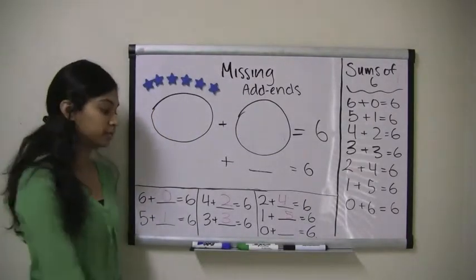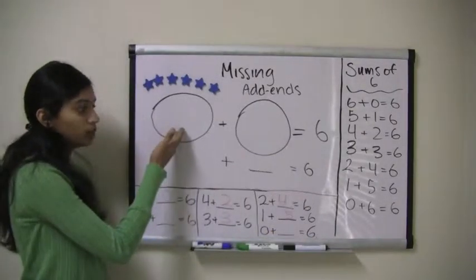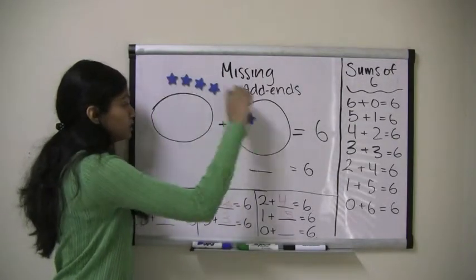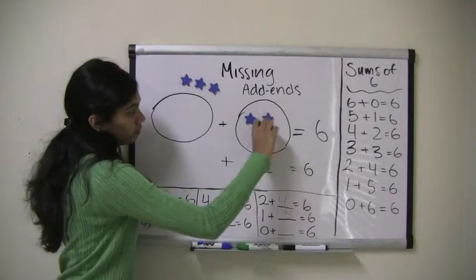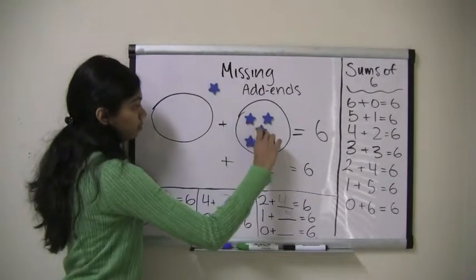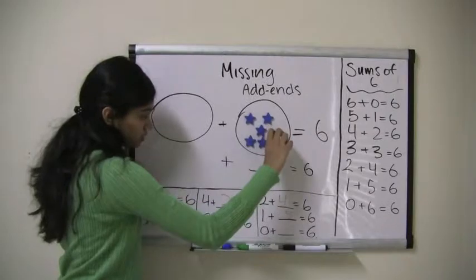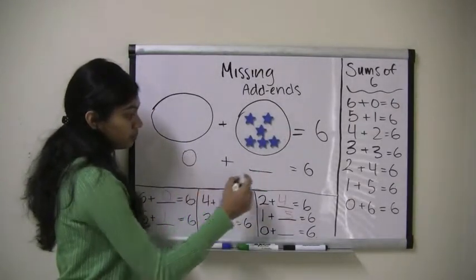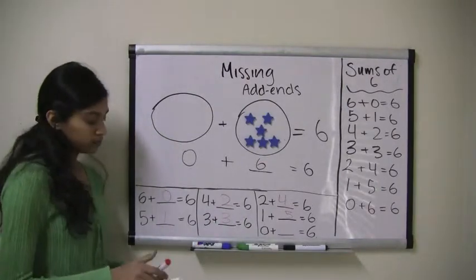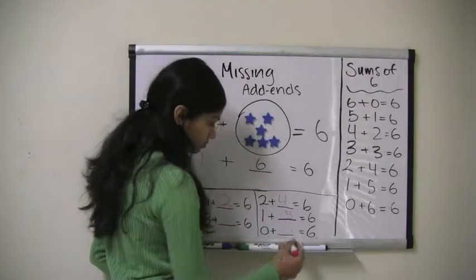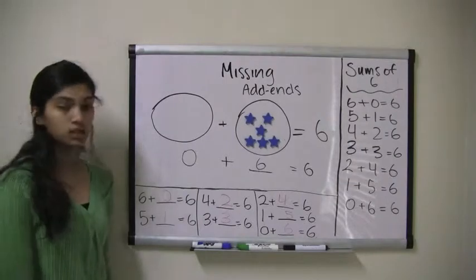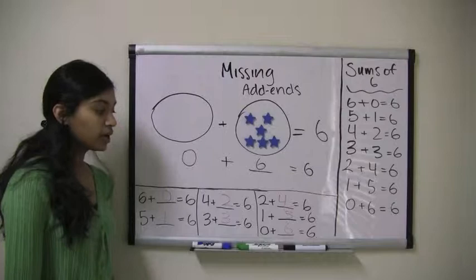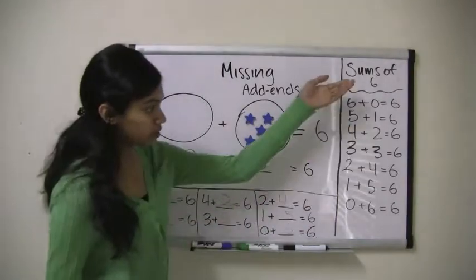Our last problem is 0 plus what equals 6? Well, we cannot put any stars in the first area. So, I put all 6 stars — 1, 2, 3, 4, 5, 6 — in the second area. So, we have 0 plus 6 which equals 6. Whenever you are trying to find a missing add-in, it is very helpful to know your sums, as we see here.